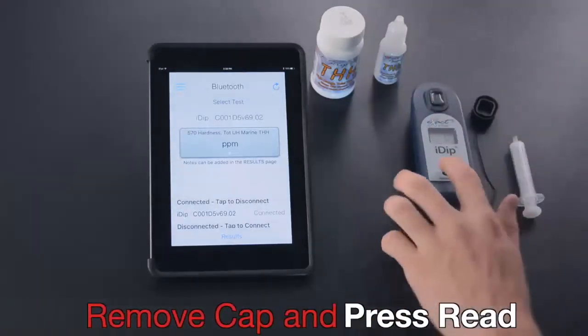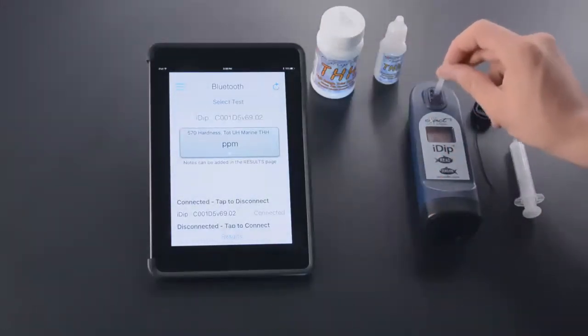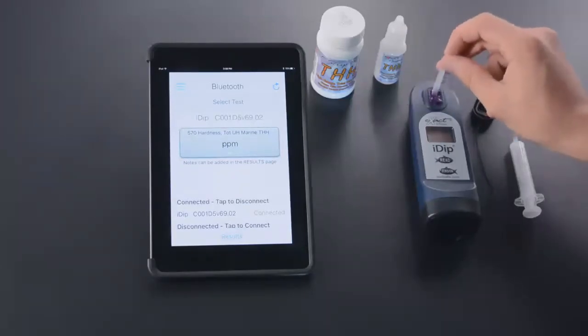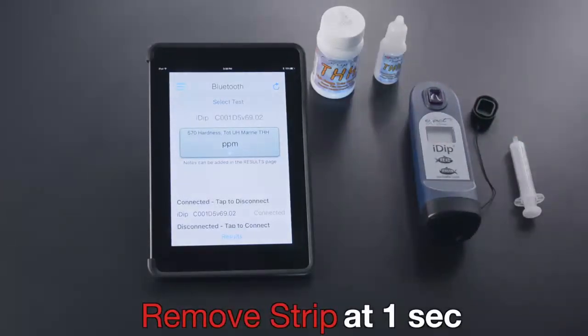Remove cap and press read. Get strip 20 seconds, one to two strokes per second. Remove strip at one second.